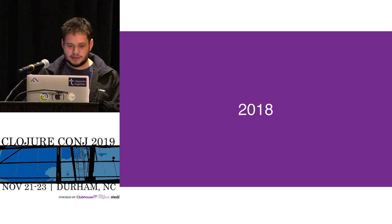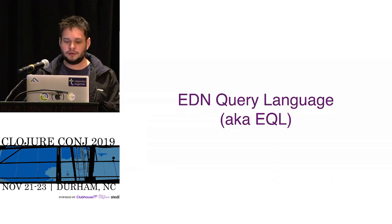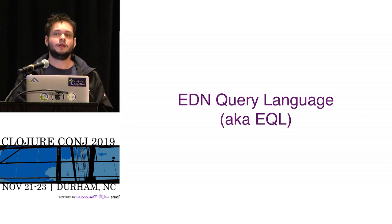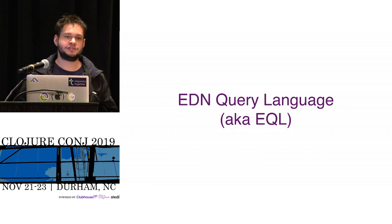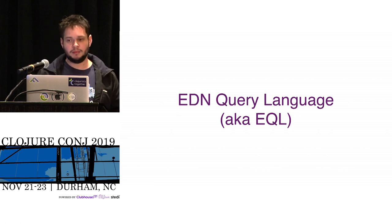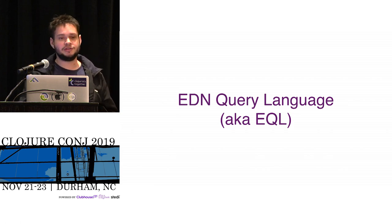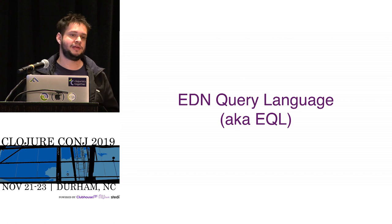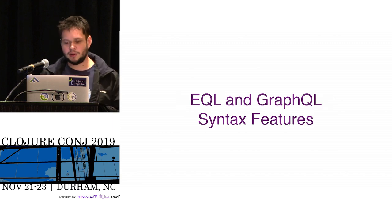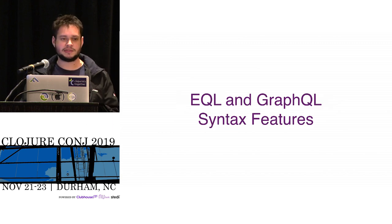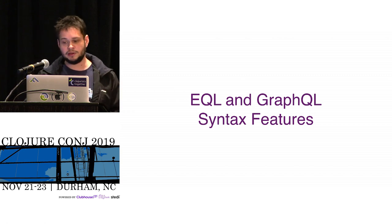In 2018, we created EQL. Because we had this Datomic pull syntax extension — Fulcro was using it, Pathom was using it — but we had no name. So we created a name just to make it easy. EQL is the GraphQL counterpart; it just defines the syntax of things.